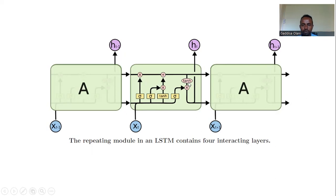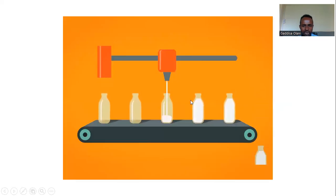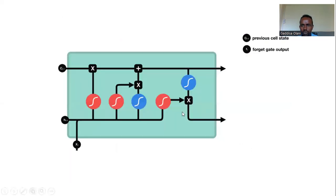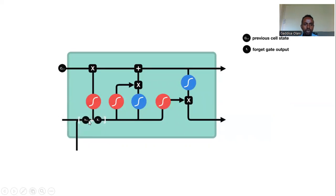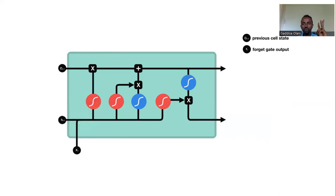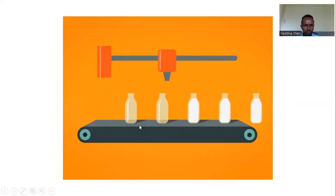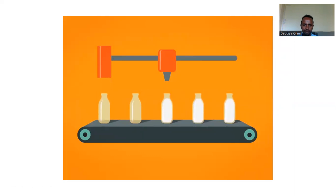The forget gate decides what to reject — if you multiply something by zero, you are forgetting it. Then there is the output gate. The input and previous hidden state are concatenated and passed through a sigmoid function: h(t-1) is the past experience and the current input is the present experience.